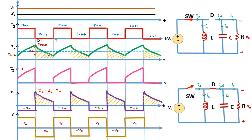Here you can see the input DC voltage waveform, which is constant. We are considering the load current to be constant. IG represents the gate current. During the ON period of the switch, when SW is in the ON condition, it acts as a short circuit or closed switch. A current IS will flow through the switch, which is the switch current.